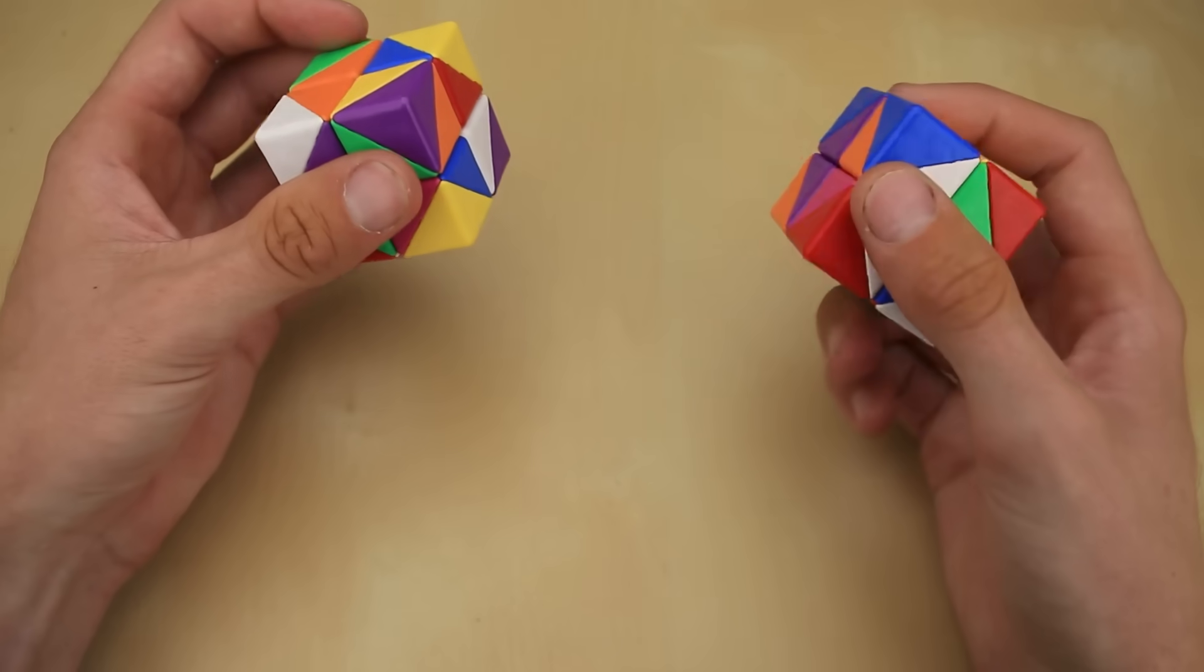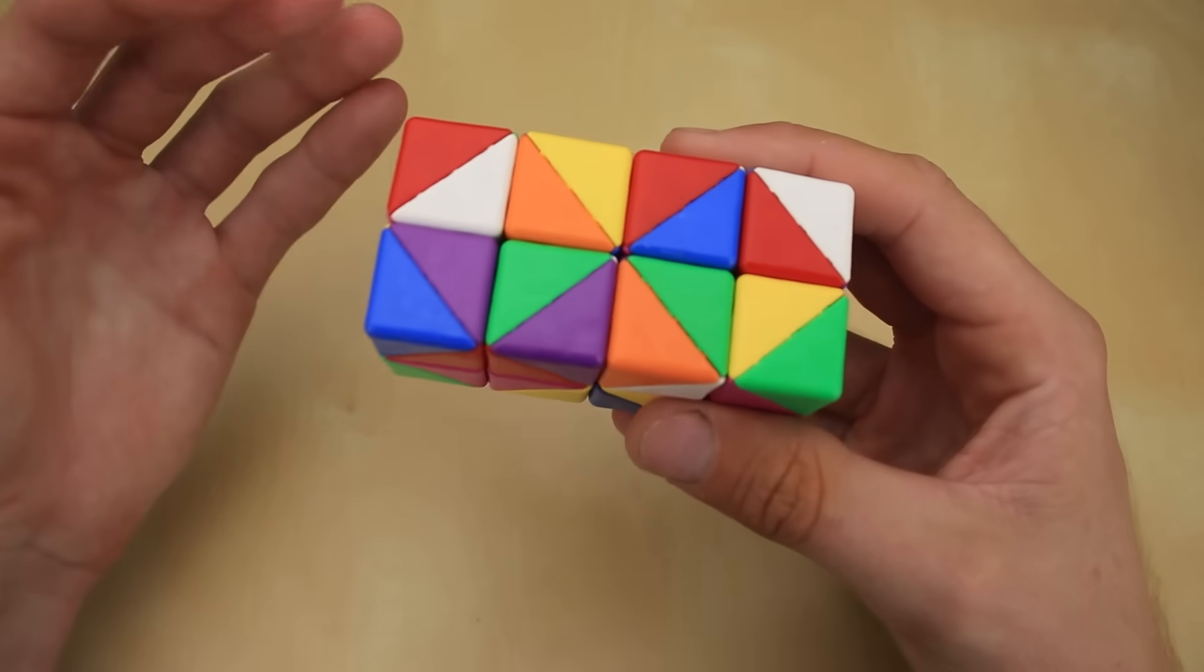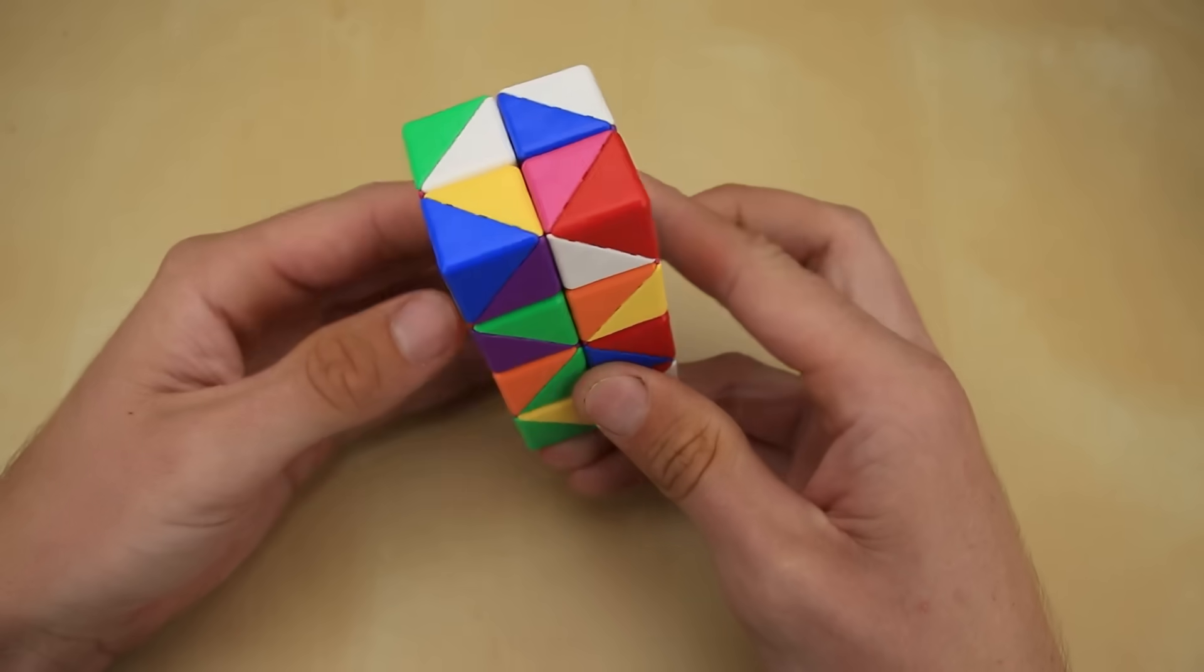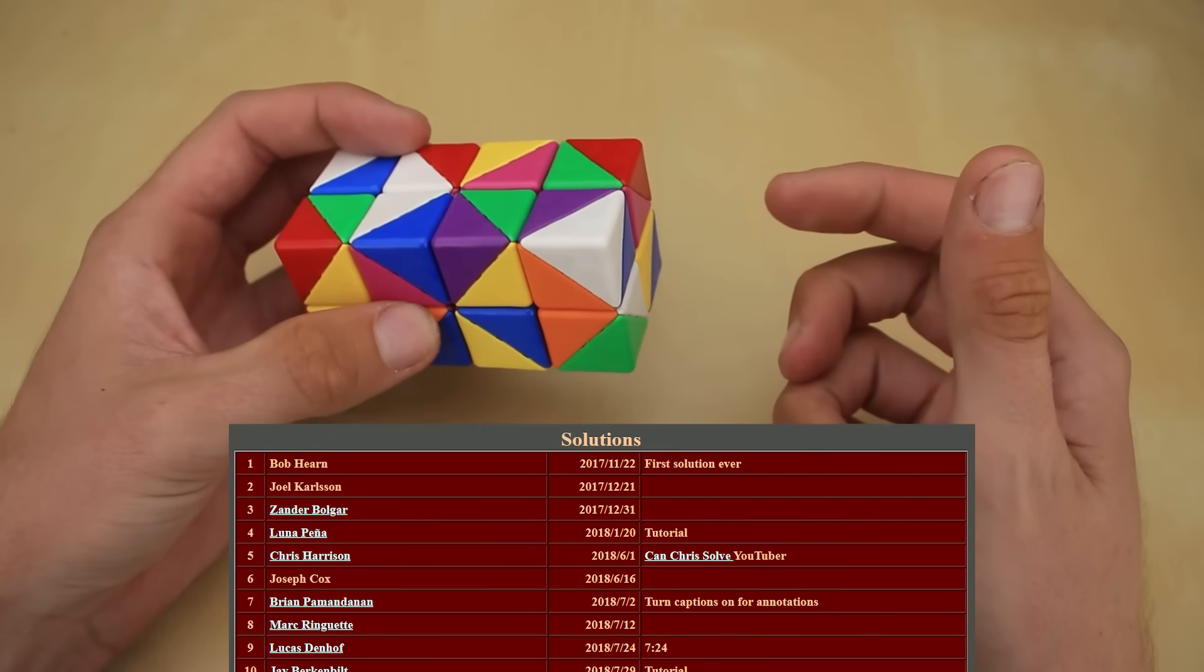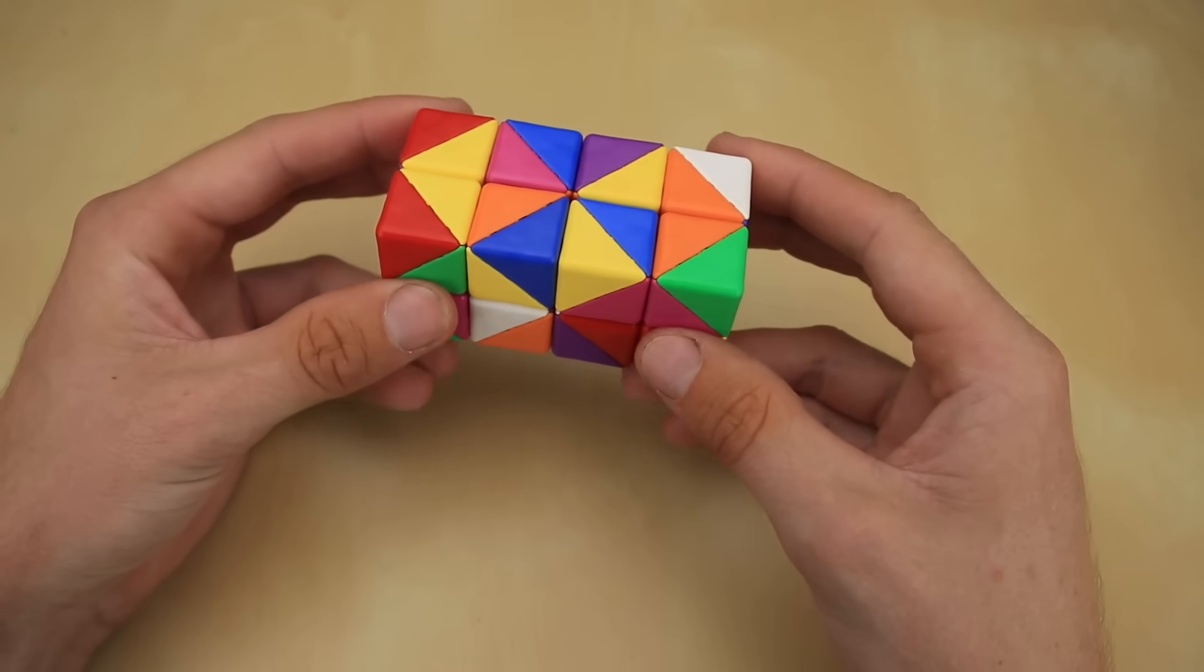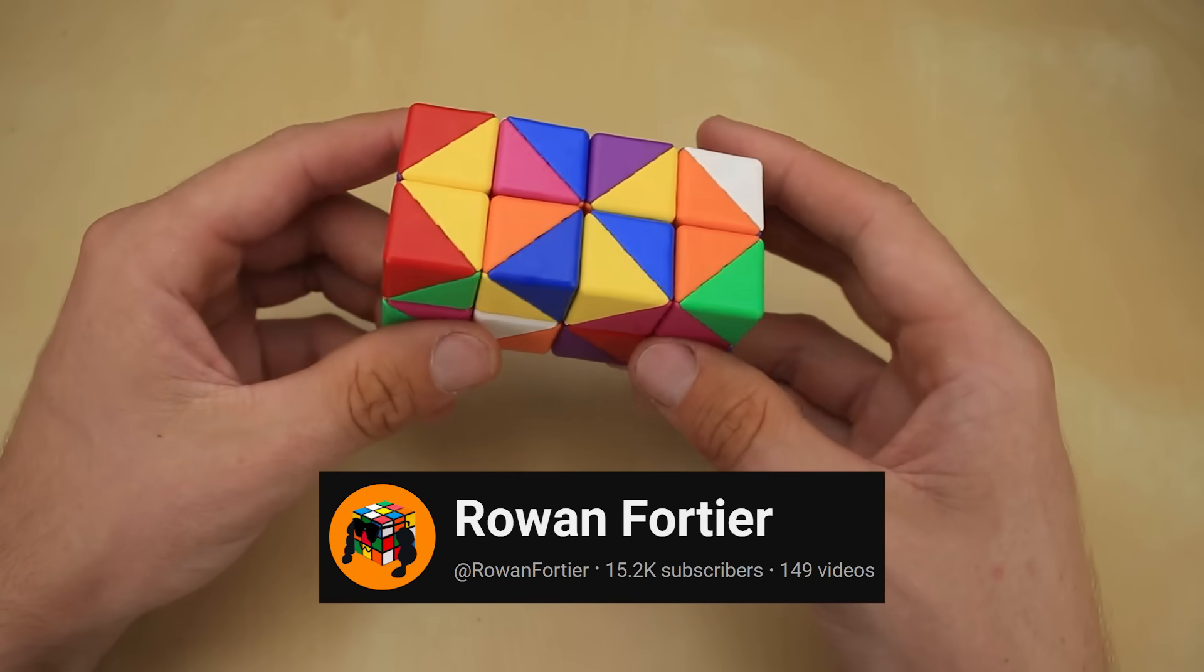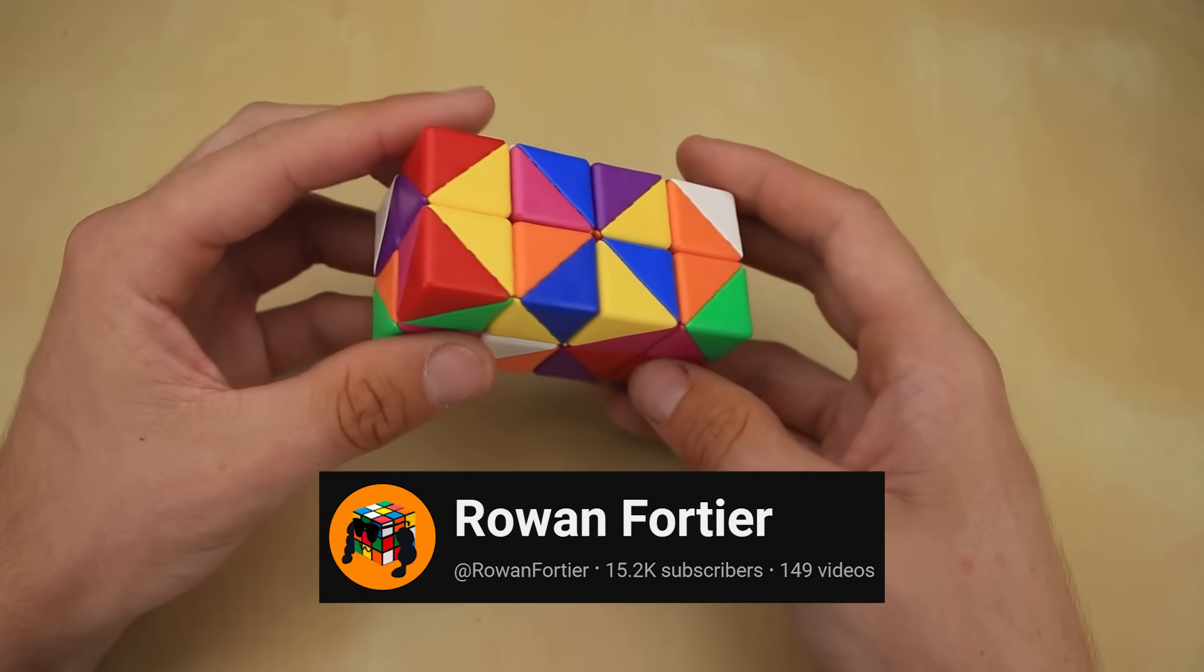So now that I've hopefully explained what a 2x2x2x2 is, and how it turns, I still have to learn how the heck to solve it. Melinda actually keeps track of everyone who's ever solved it, with a big list on her website, and I need to get myself onto that list before this video is over. Luckily, there are some great tutorials on how to solve it right here on YouTube. I've been watching one by Rowan Freudier, which I'll link below. He seems to have some of the best higher-dimensional cubing content on YouTube.